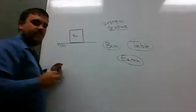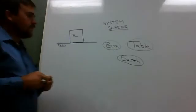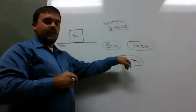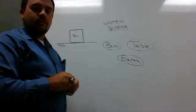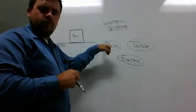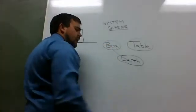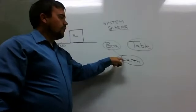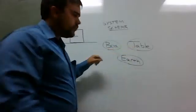And so the way the system schema works is as follows. I'm going to ask myself, I'm going to look at the Earth. Is the Earth exerting a force on the box? Sure. So I'm going to draw a line like that. Is the Earth exerting a force on the table? Sure.